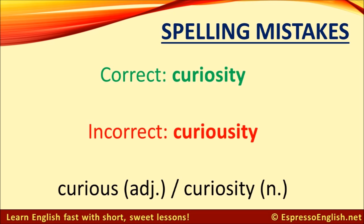A lot of people also make mistakes with the word 'curiosity.' It's interesting because the adjective 'curious' does contain the letter U, but the noun form 'curiosity' does not. Notice that the strong syllable is also different: the adjective form is 'CURious' — the first syllable is strong, as in 'He was a curious boy.' And in the noun form 'curiOSity,' the third syllable is strong, as in 'His curiosity got him into trouble.'